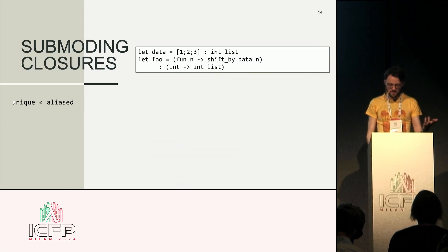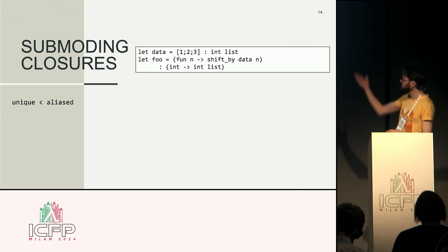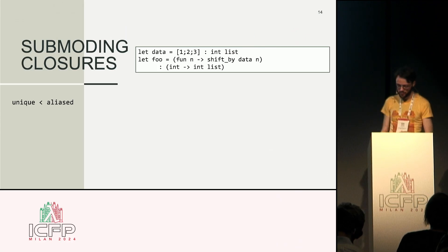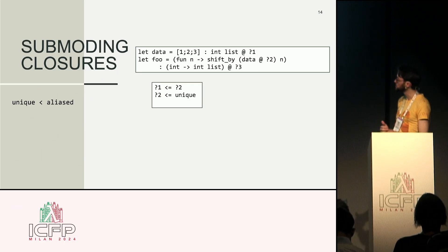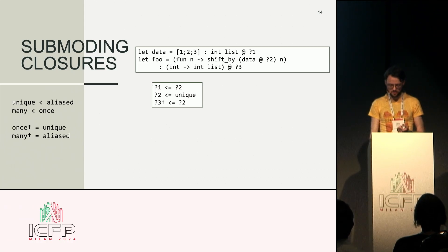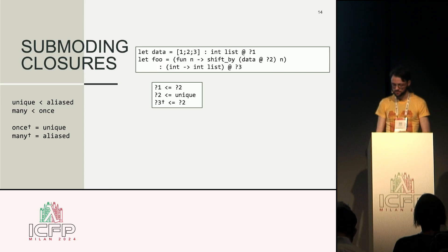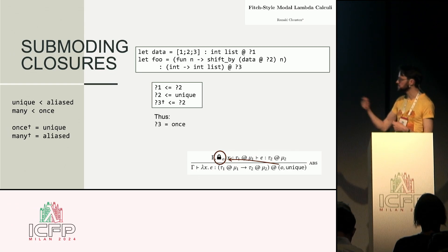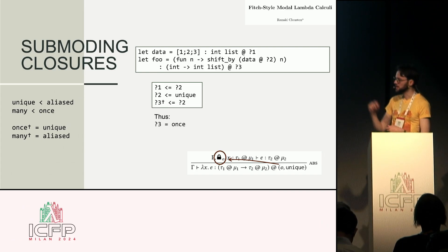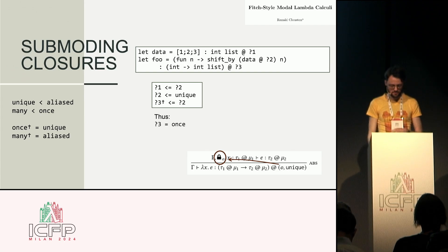We can use a very similar trick to type closures. We relate the mode of the closure to the mode of its free variables by an extra relation. In the type checker, we put a lock into the context, and whenever you use a free variable in a closure, it must go through this lock, adding the corresponding inequality into the sub-moding solver.